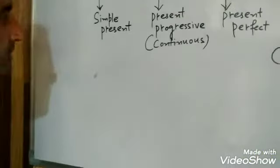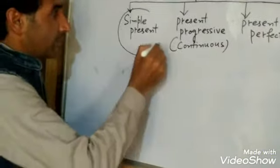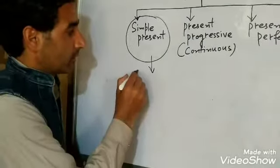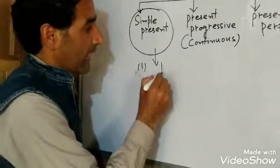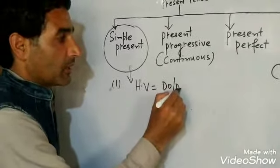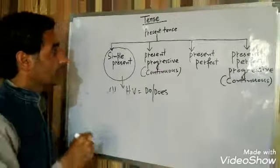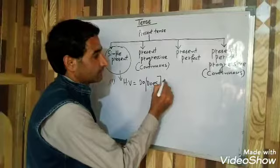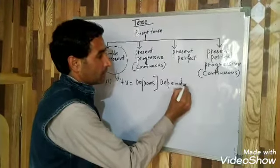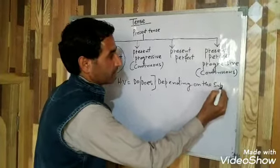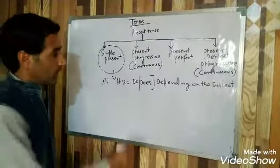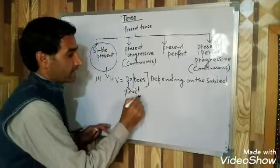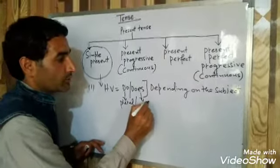Now let us take simple present. In simple present, we use the helping verb 'do' or 'does', depending on the subject. 'Do' is used with plural subjects and with 'I'. 'Does' is used with singular subjects.